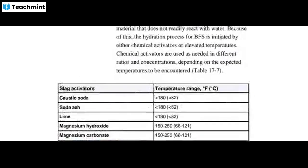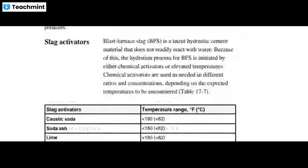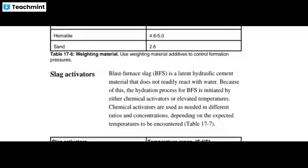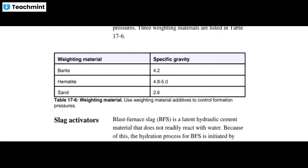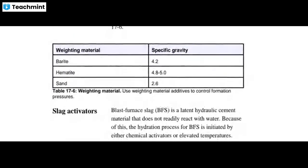Weighing materials are used to increase the density of the cement or slag and help control formation pressure. Weighing materials include barite, hematite, and sand.